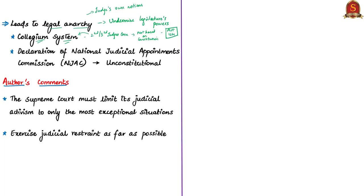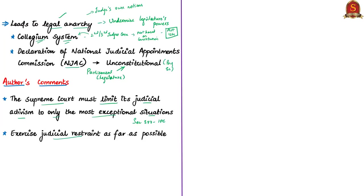Secondly, the authors have discussed the National Judicial Appointments Commission, or NJAC. The NJAC was passed by the unanimous will of Parliament, but the Supreme Court declared this NJAC Act to be unconstitutional on the grounds that it would affect the judiciary's independence. The authors of this editorial call this legal anarchy as well. Finally, the authors comment that the Supreme Court must limit its judicial activism to only the most exceptional situations — like the striking down of Section 377 of IPC — and the judiciary must exercise judicial restraint as far as possible.